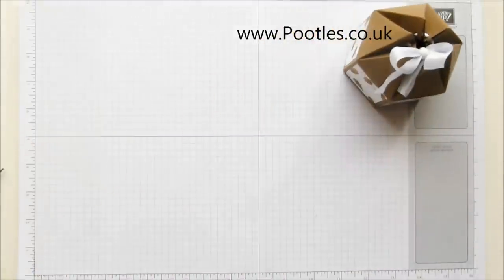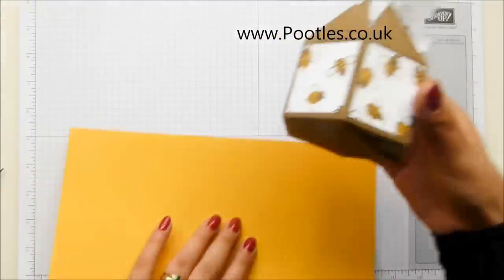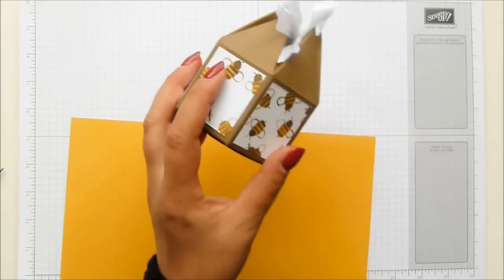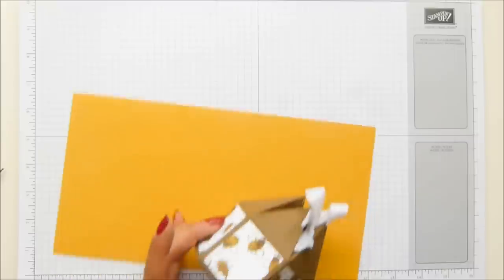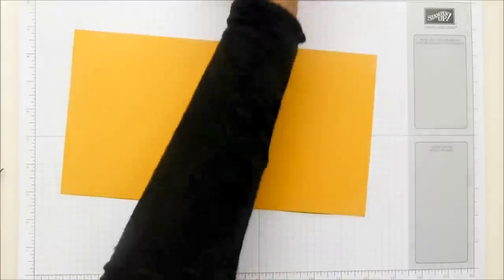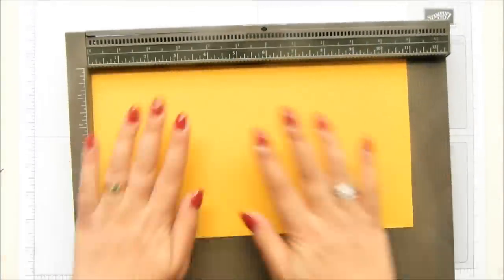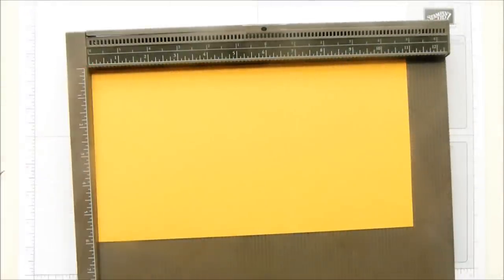Okay, you need a piece of cardstock that is 11 by 6. I use soft suede with this one because the English garden paper has got these beautiful bees in and it's soft suede. But I'm going with the Hello Honey this time. So 11 by 6 inches, 28 by 15 centimeters.